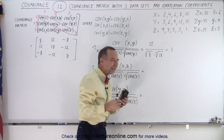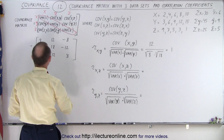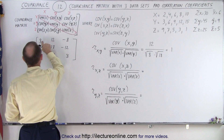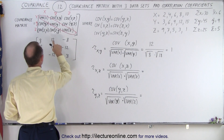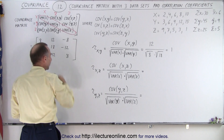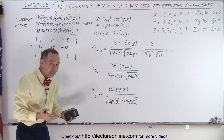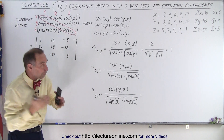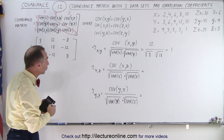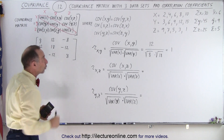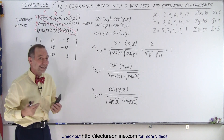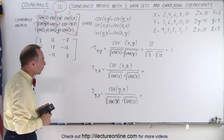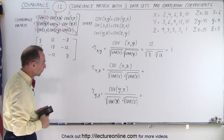We could not tell that by looking at the covariance. We have a variance of 8 and a variance of 18, so with a covariance of 12 we did not realize that there was a perfect correlation between the two data sets. But finding the correlation coefficient indicates that, indeed, they are perfectly correlated to one another.